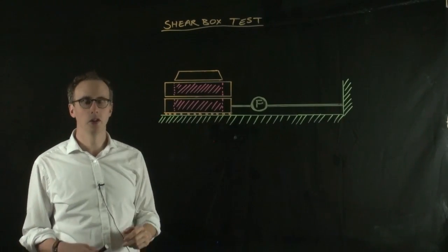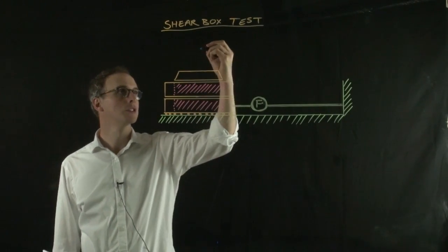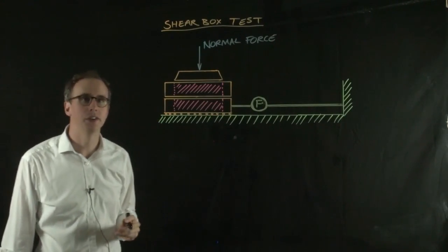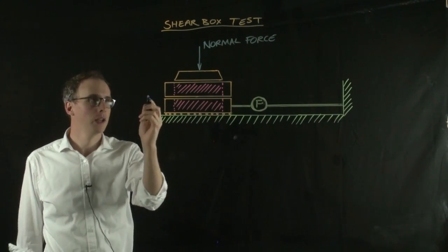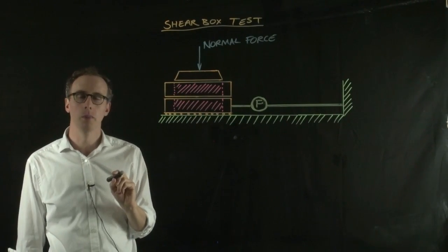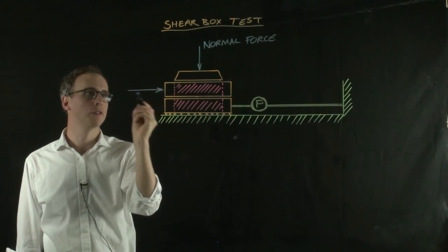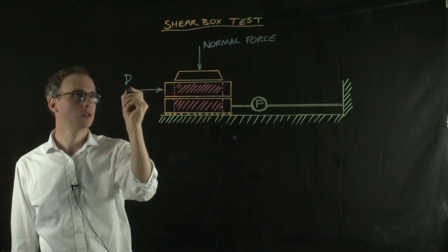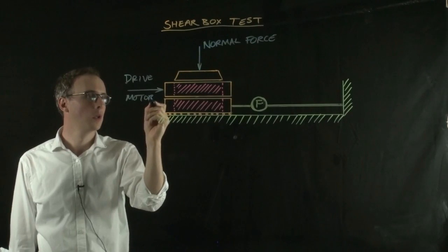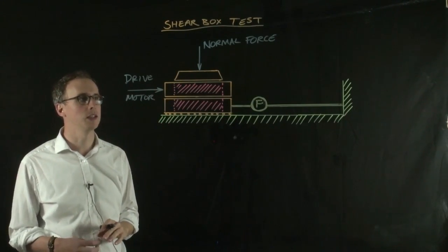We suspend a normal load onto the lid of the shear box, applying a normal force. We create shear force using a drive motor which pushes the top half of the box away from the bottom half, and that creates the shear force within the sample.